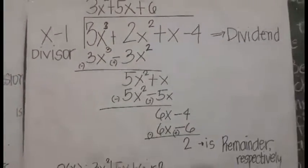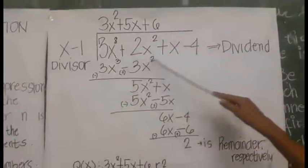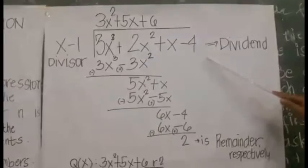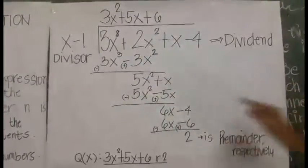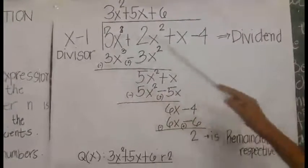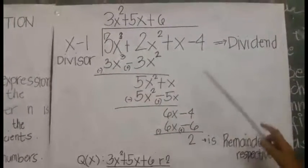The given is 3x cubed plus 2x squared plus x minus 4 divided by x minus 1. This is the dividend and this is the divisor. So, let's proceed on solving.